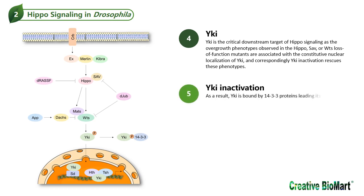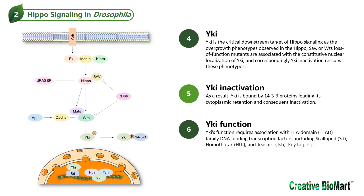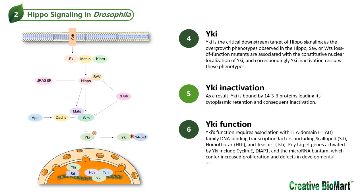As a result, Yorkie is bound by 14-3-3 proteins, leading to its cytoplasmic retention and consequent inactivation. Yorkie's function requires association with T-domain family DNA binding transcription factors, including Scalloped, Homothorax, and Teashirt. Key target genes activated by Yorkie include Cyclin E, Diap1, and the microRNA bantam, which confer increased proliferation and defects in developmental apoptosis.